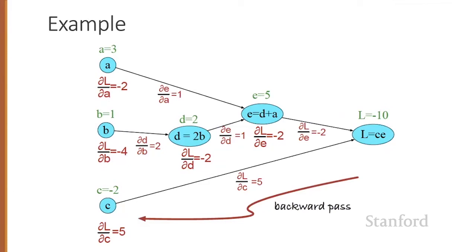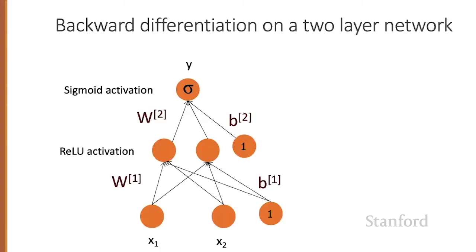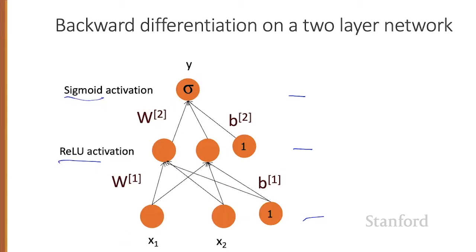Here's the entire backward pass written out neatly. Of course, computation graphs for real neural networks are much more complex. Here's a sample computation graph for a two-layer neural network with two input units, two hidden units, and one output unit. We'll have a ReLU in the middle and a sigmoid at the end. The equations are: WX plus B, then ReLU, then the next layer of WX plus B followed by a sigmoid. The final answer y-hat is the activation after the sigmoid.